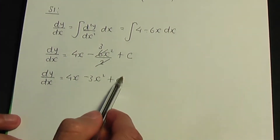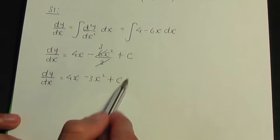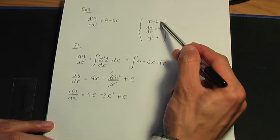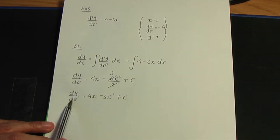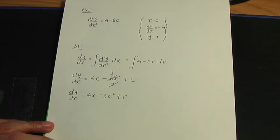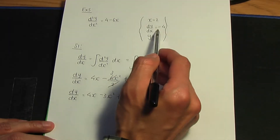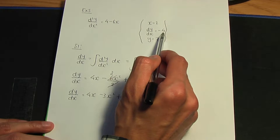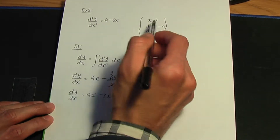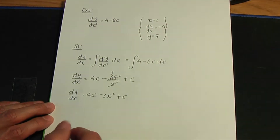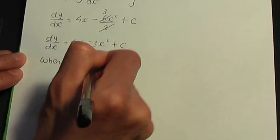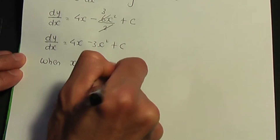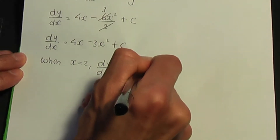Now let's work out the value of c. Going back to the given conditions, we'll use the x value and the dy/dx value to find the integration constant. So we use dy/dx equals minus 4 when x equals 2.